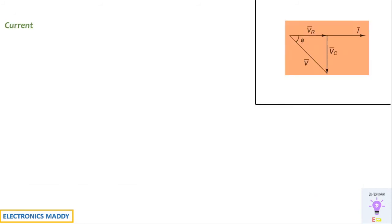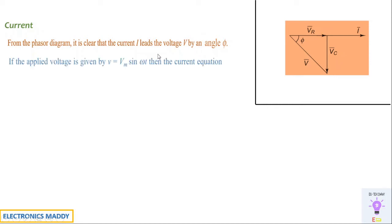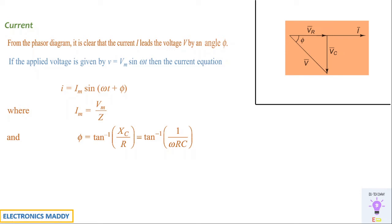Our next concept is with respect to current. From the phasor diagram already drawn, we can clearly say that I is leading V by an angle equal to phi. If we consider V equal to Vm sine omega T as the voltage, then I is equal to Im sine (omega T plus phi). The reason it is plus phi is that current I is leading with respect to V; if the current were lagging behind V, we would write sine (omega T minus phi). Im is Vm divided by Z according to Ohm's law, and phi can be determined by phi equals tan inverse of XC by R, which equals tan inverse of 1 divided by omega RC. These relationships are used to find the magnitude and phase angle of the current I in a series RC circuit.